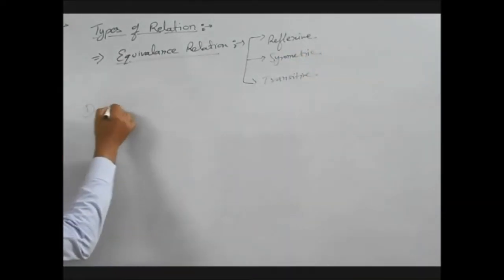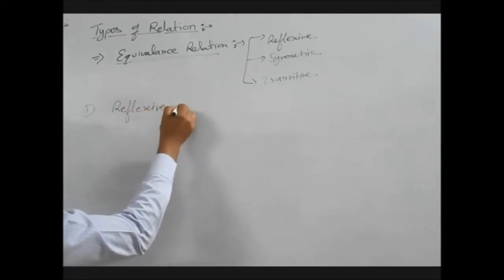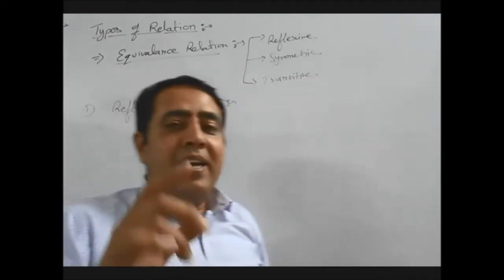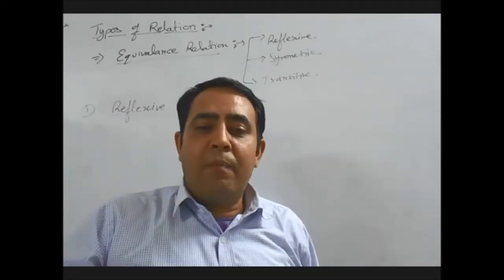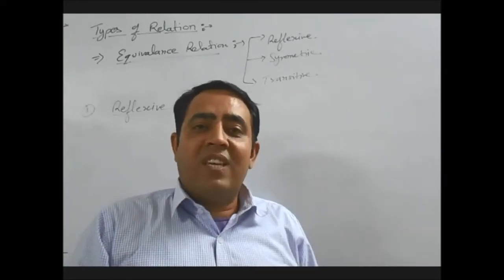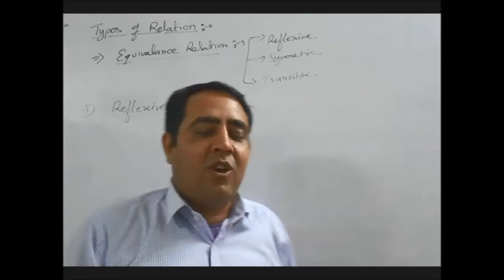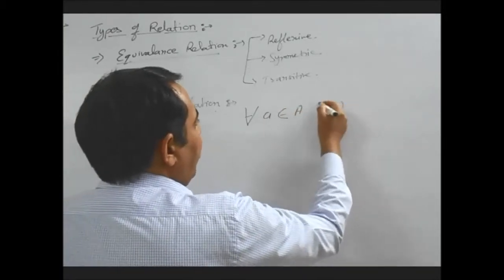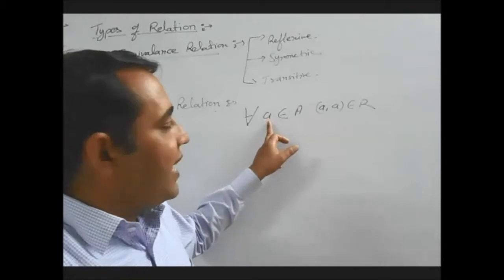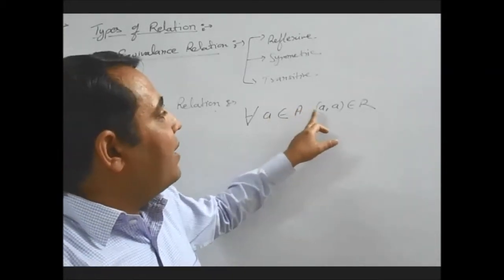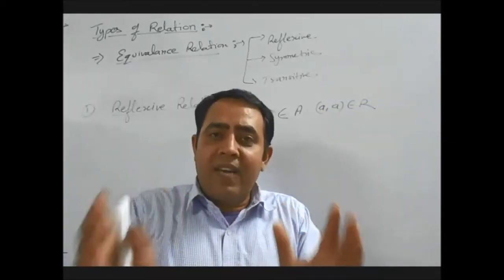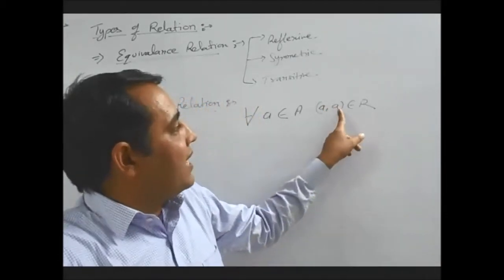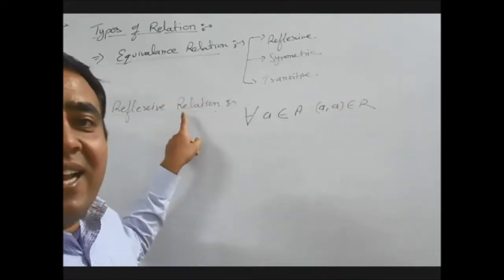First of all we will take reflexive relation. What do we mean by reflexive relation? All elements of set A possess the same property — they apply the same property given in the question on themselves also. That type of relation is known as reflexive relation. We write: for all A belonging to set A, (A, A) belongs to R. Meaning all elements of set A are related to themselves. If all elements are related to themselves, then we say that relation is a reflexive relation.